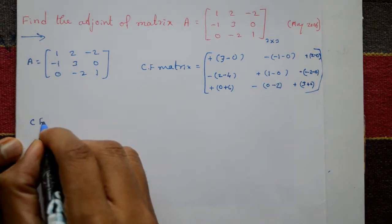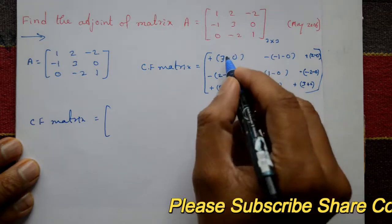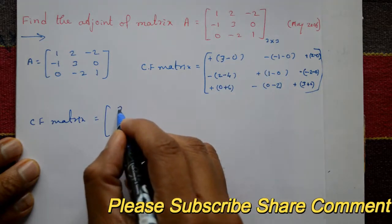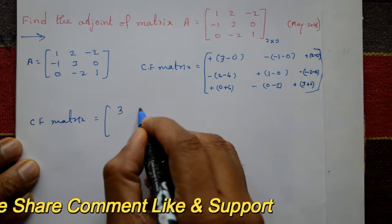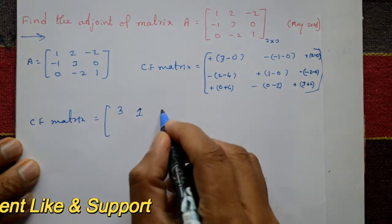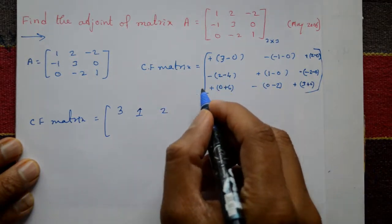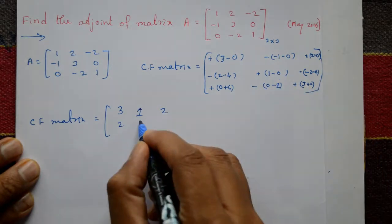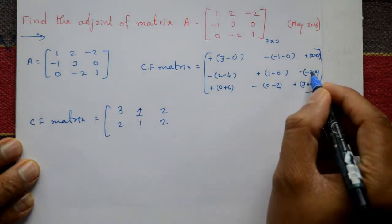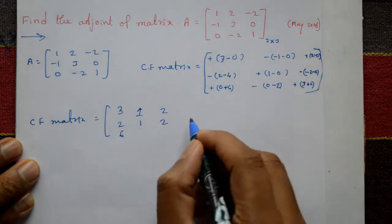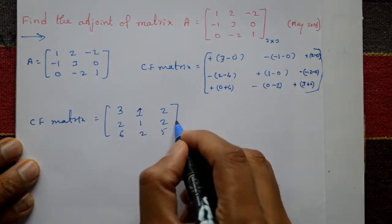Now cofactor of matrix is: 3, 1, 2; minus 2, 1, minus 2; 6, 2, 5.